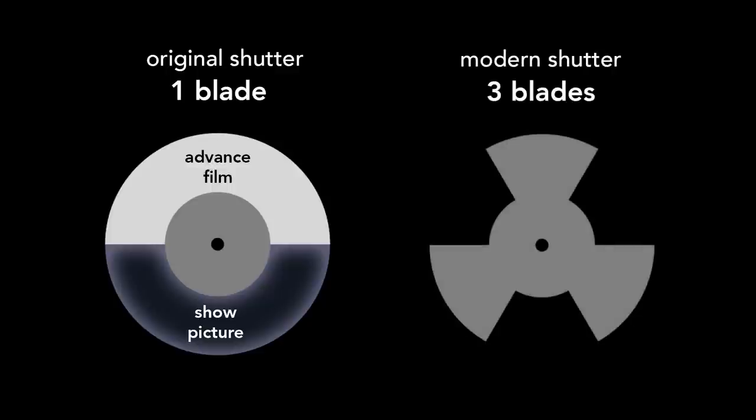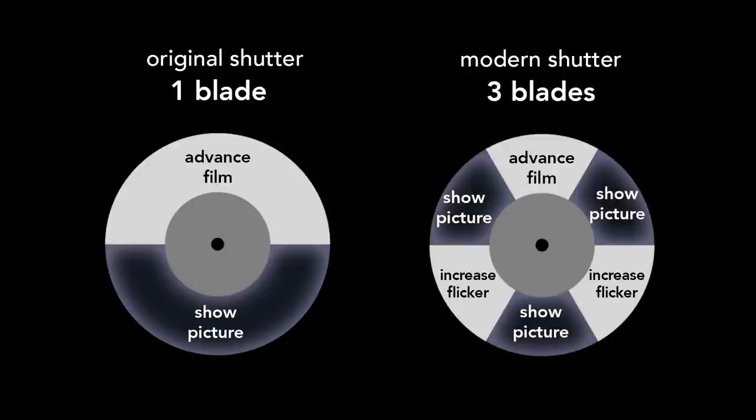Originally, shutters had a single blade that covered the advancement of the film with an open section that showed the picture. Modern shutters have three blades. The first blade covers the film motion. The second two blades block the light even when the film is stationary. They only serve to increase the flicker rate. The three openings allow the image to be projected half the time.